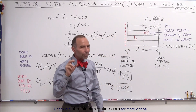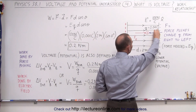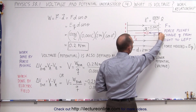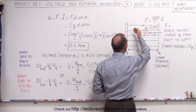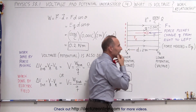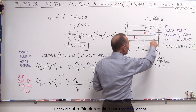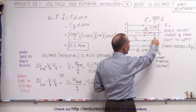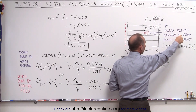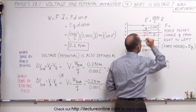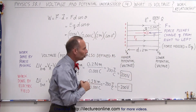Now we're going to place a charge between the plates, right over here, and we're going to push that charge across from the negative side to the positive side. That's going to require a force, indicated by the purple F here, pushing the charge Q from right to left. Let's assume that Q is equal to 1/1000 of a Coulomb.